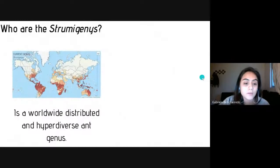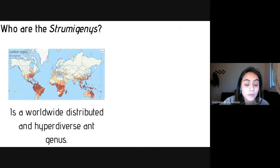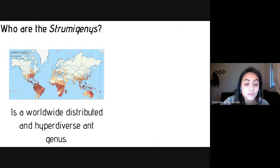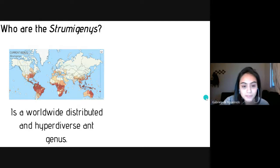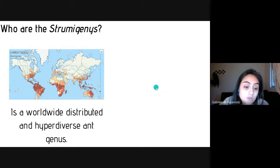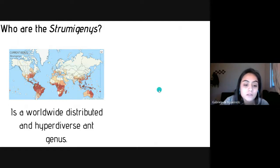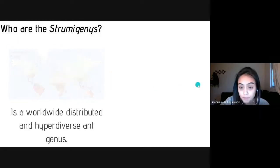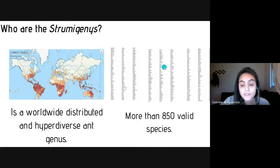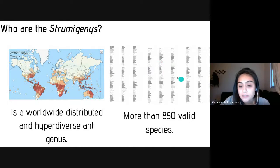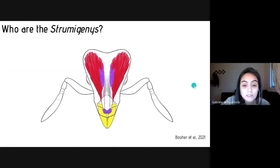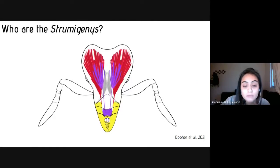To start, I will make a brief introduction, beginning with the question: who are Strumigenys? Strumigenys is a worldwide distributed and hyper-diverse genus. They don't tolerate low temperatures and predominantly inhabit the leaf litter and topsoil of tropical forests, being the main predators of springtails and other soft-bodied insects.